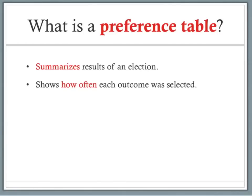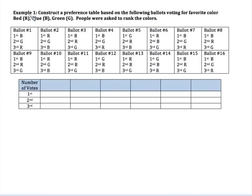Now, in order to help us organize all of the ballots, we use something called a preference table. A preference table summarizes the results of an election and shows how often each outcome was selected. In our first example, it says construct a preference table based on the following ballots voting for favorite color. We have red, blue, and green, and people were asked to rank the colors in order from their favorite to their least favorite. We had 16 ballots.